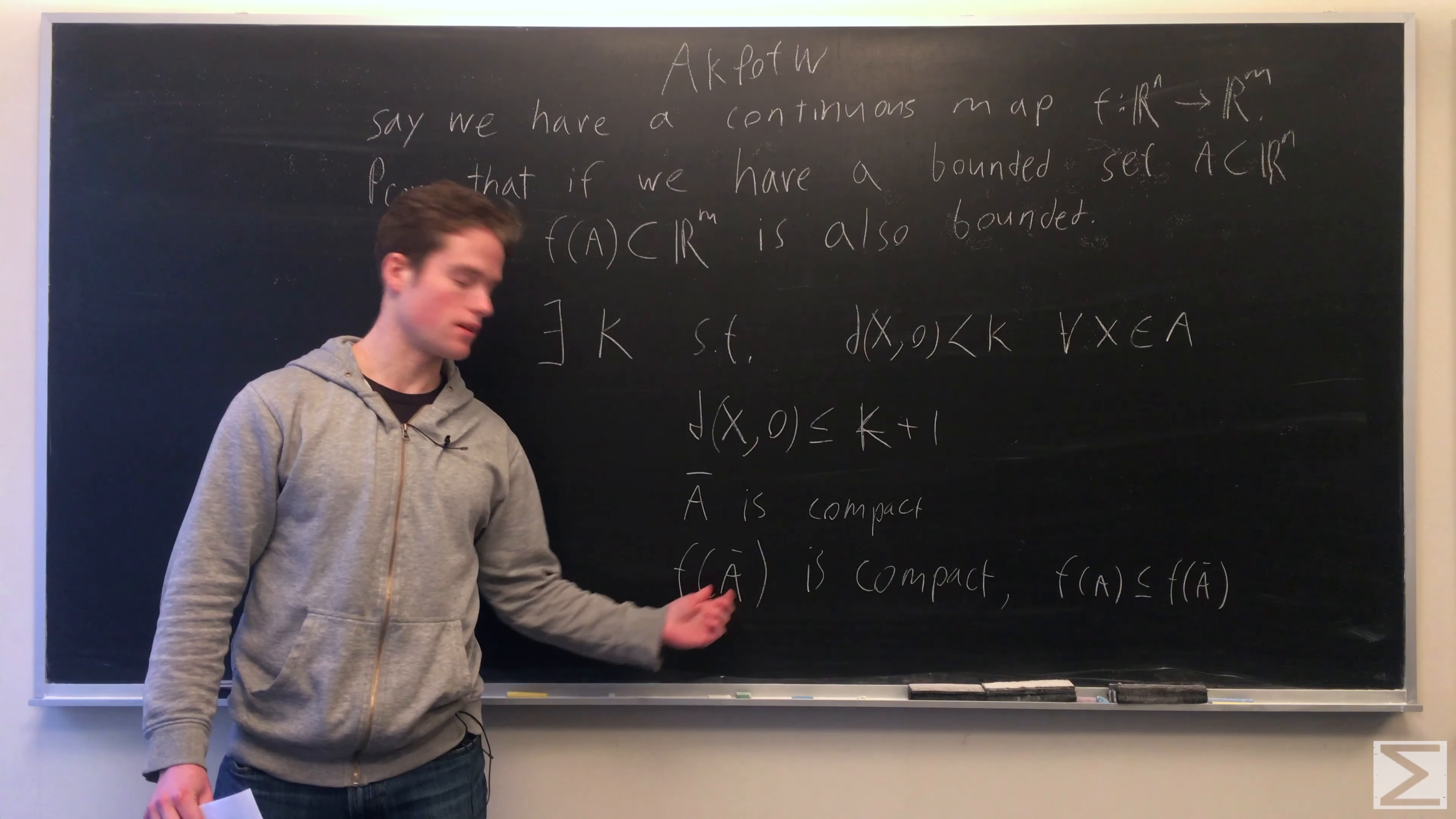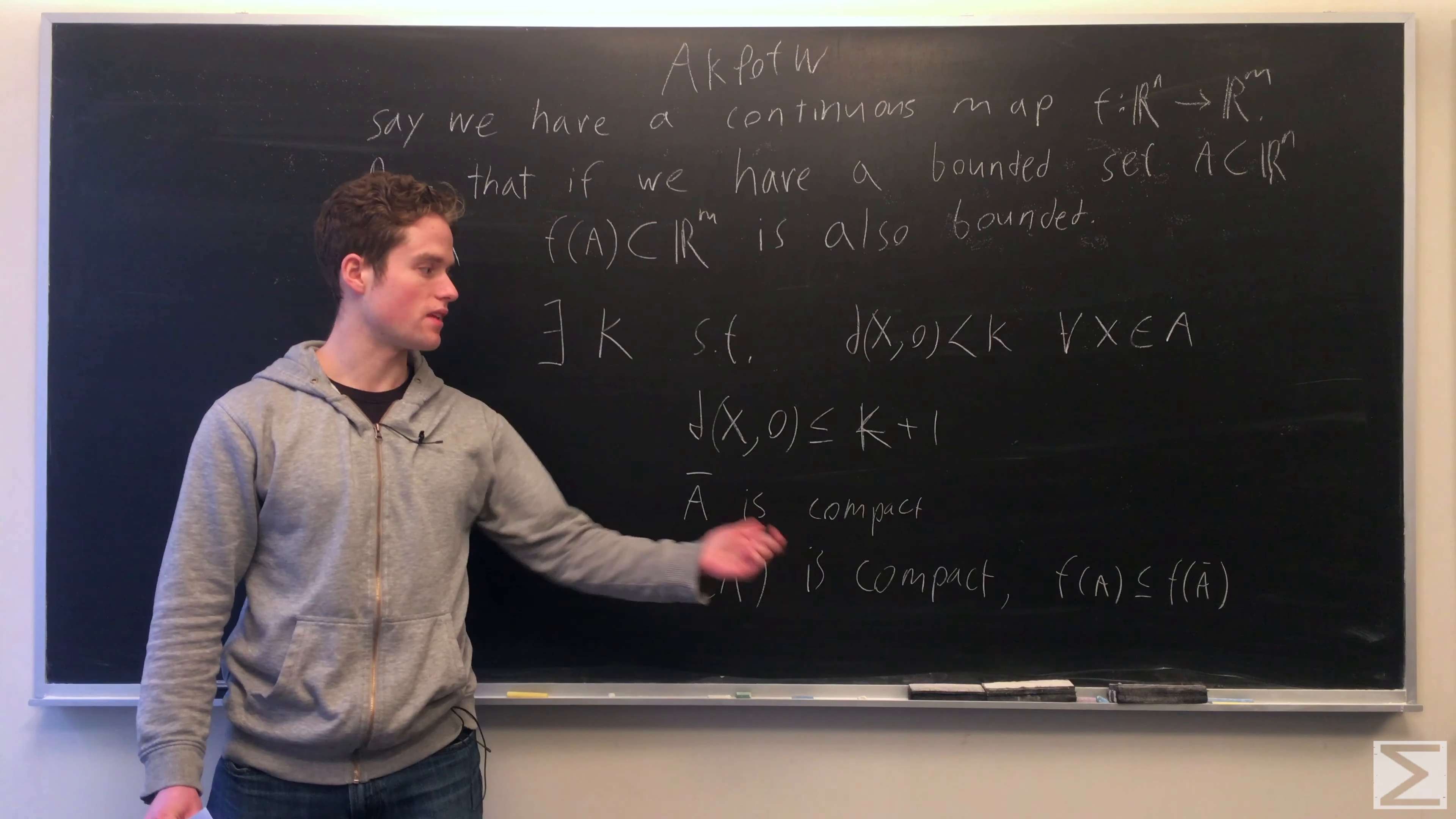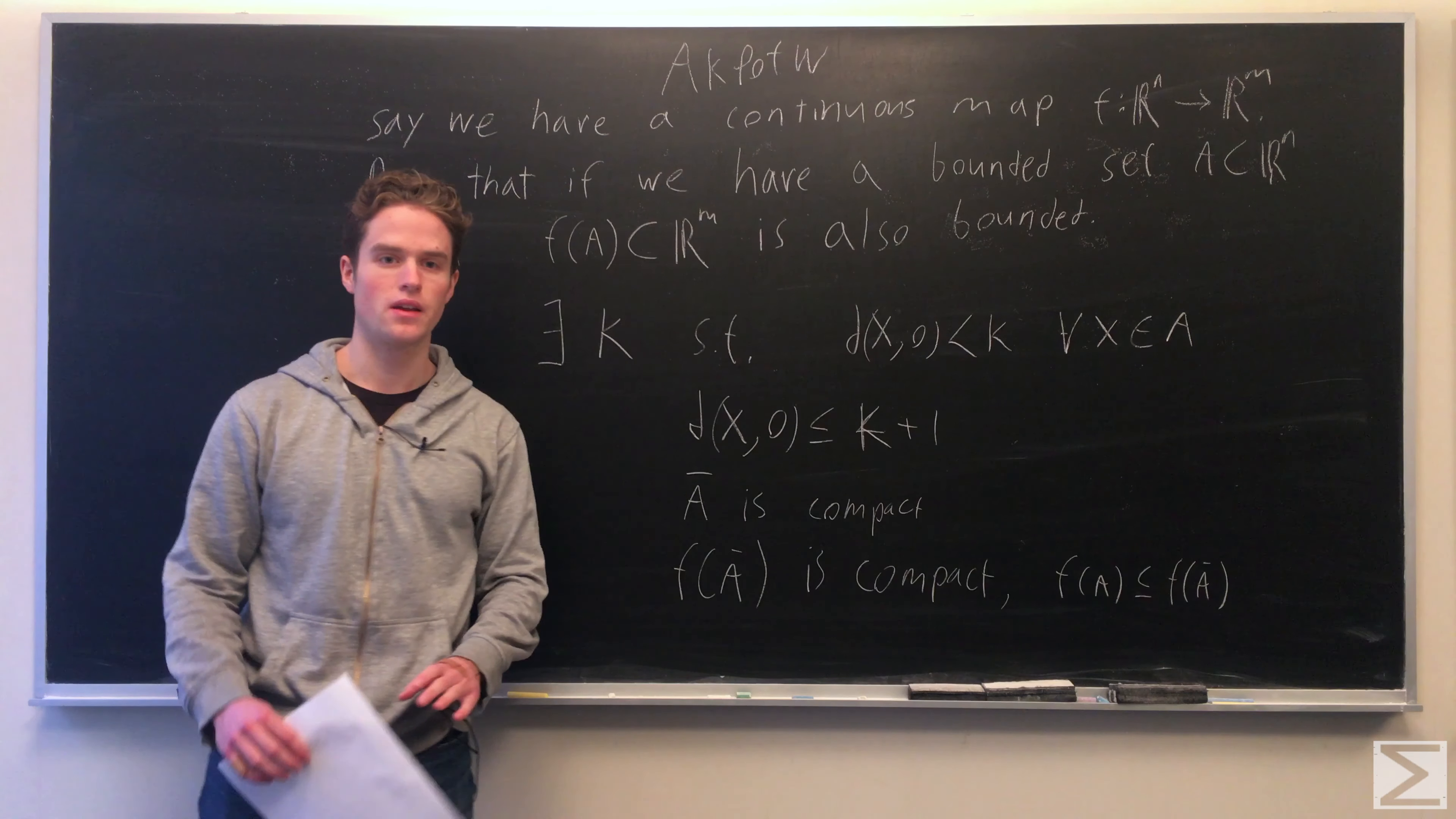Since F(A-bar) is compact, and compact means closed and bounded, F(A-bar) is bounded. F(A) is then contained in a bounded set. So there's some K that contains all of F(A-bar) and that same K works for F(A). Therefore, F(A) is also a bounded set.